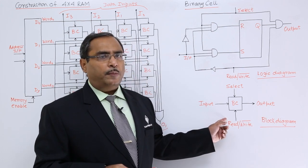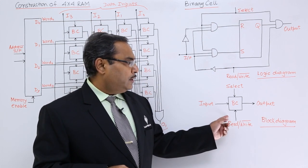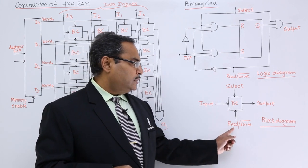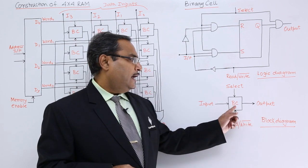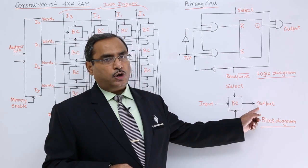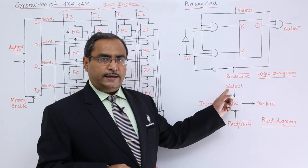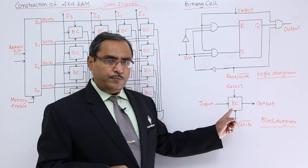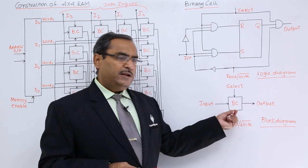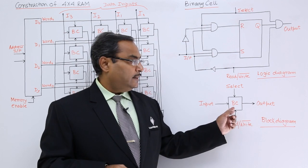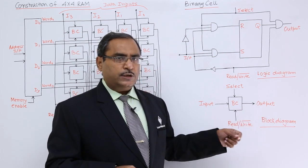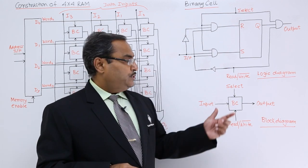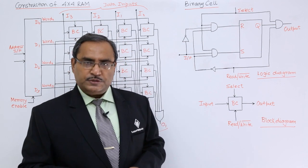In this RAM circuit construction, we shall be using the block diagram of the binary cell. In the block diagram, we have a select line, an input line, and a read/write selection line as inputs, along with a respective output. When the binary cell is selected, depending upon the mode, it will either be in read mode or write mode. In read mode, the bit residing in the binary cell is obtained at the output; in write mode, the new input is written onto the binary cell.